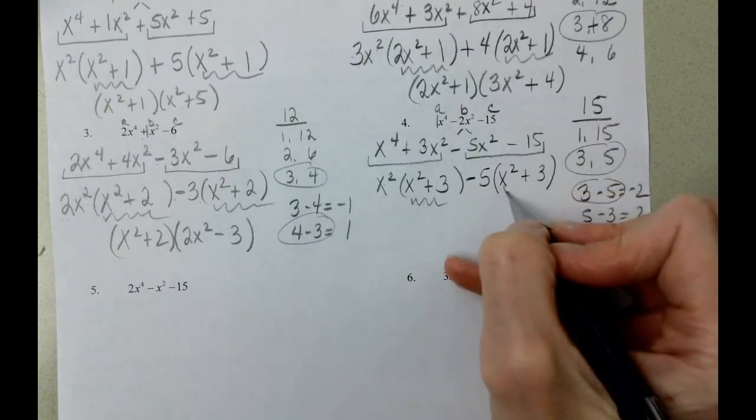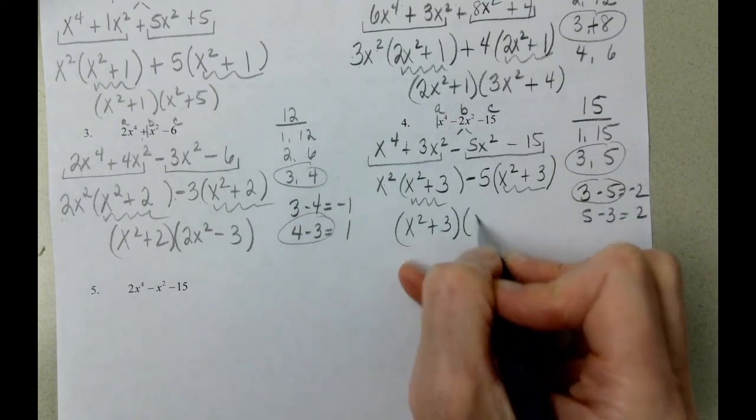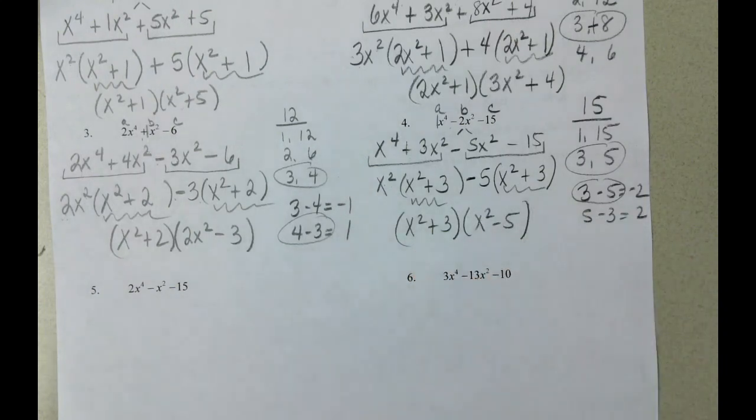And we've got x squared plus 3, and then x squared minus 5.